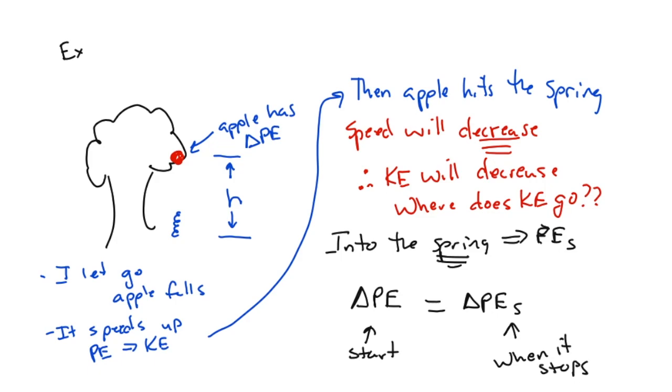So essentially what just happened was the spring absorbed the delta PE energy. So if I was given like mgh, I could solve for PE and then plug it into here and solve for this. So I could look at the relationship of mgh and one half Kx squared. And I'll be given a bunch of these variables and I'll be able to solve for it.